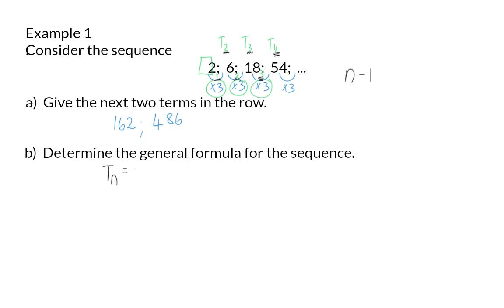For our general formula we can say we start at 2 and then multiply by 3 every time, but not n times, but one less than the position of the term. So our general formula is 2 times 3 to the power of n minus 1.